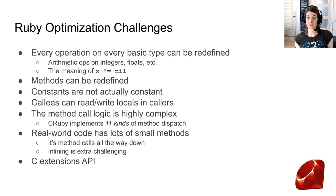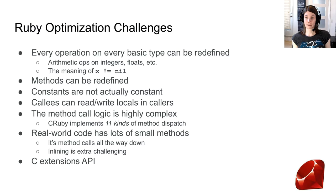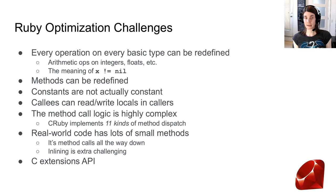CRuby implements 11 different kinds of method dispatch dealing with various situations. Real-world code has a lot of very small methods because it's so object-oriented — it's method calls all the way down. Inlining is very challenging, which is problematic because you need to inline deeply to really optimize Ruby code. There's also the same difficulty as in Python: CRuby has a C extensions API that exposes some internals of the implementation.